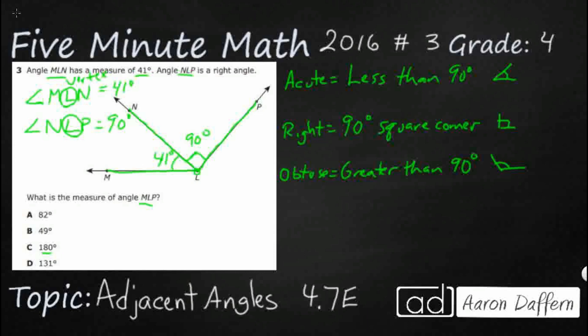So, we now know MLN is 41. We figured out that NLP is a right angle, but that right angle equals 90 degrees. Now, we need to find the measure of MLP. Okay. So, angle MLP. So, I'm going to start with M. I'm going to trace it right there. L, once again, is my vertex. But now, I'm going to go up to P. So, I'm looking for that right there, that big chunk right there.